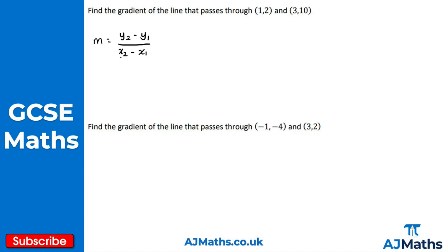So where do x1, x2, y1, and y2 come from? We pick this point as x1 and y1, so this must be x2 and y2. It doesn't matter if you switch these around. To keep it consistent: if this is x1, this must also be y1; if that's x2, that must also be y2.